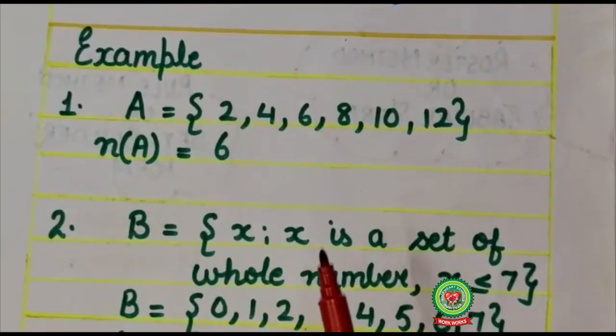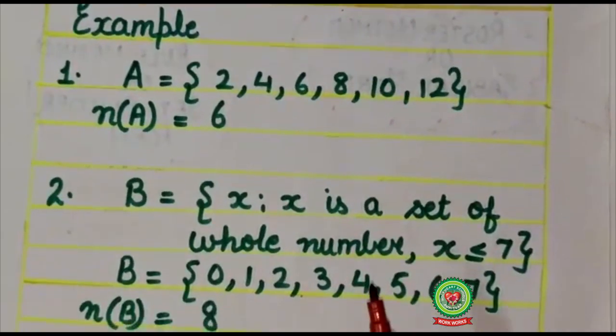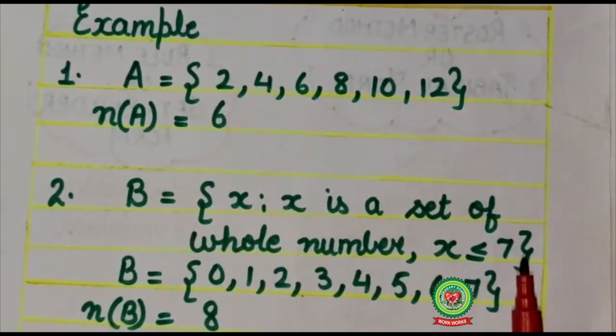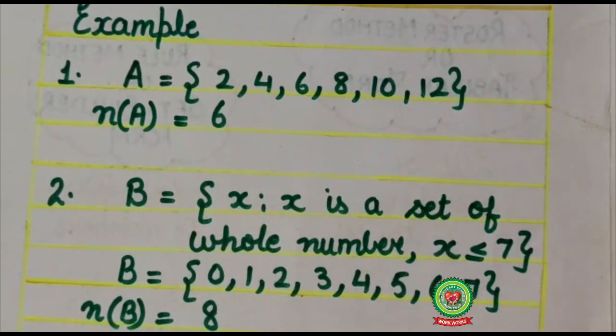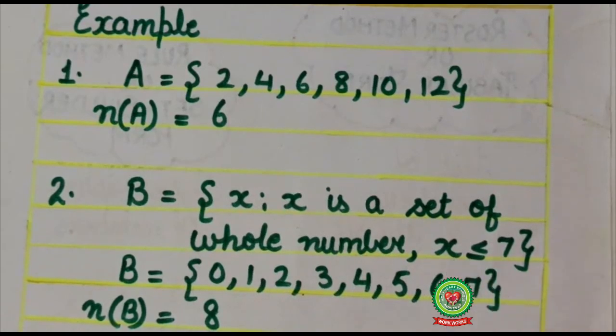Here B set is {x: x is a set of whole numbers, x ≤ 7}. It is given in set builder form. So first of all write it into roster form. Here B will come {0, 1, 2, 3, 4, 5, 6, 7}. 7 will also come because here equals to sign is given.